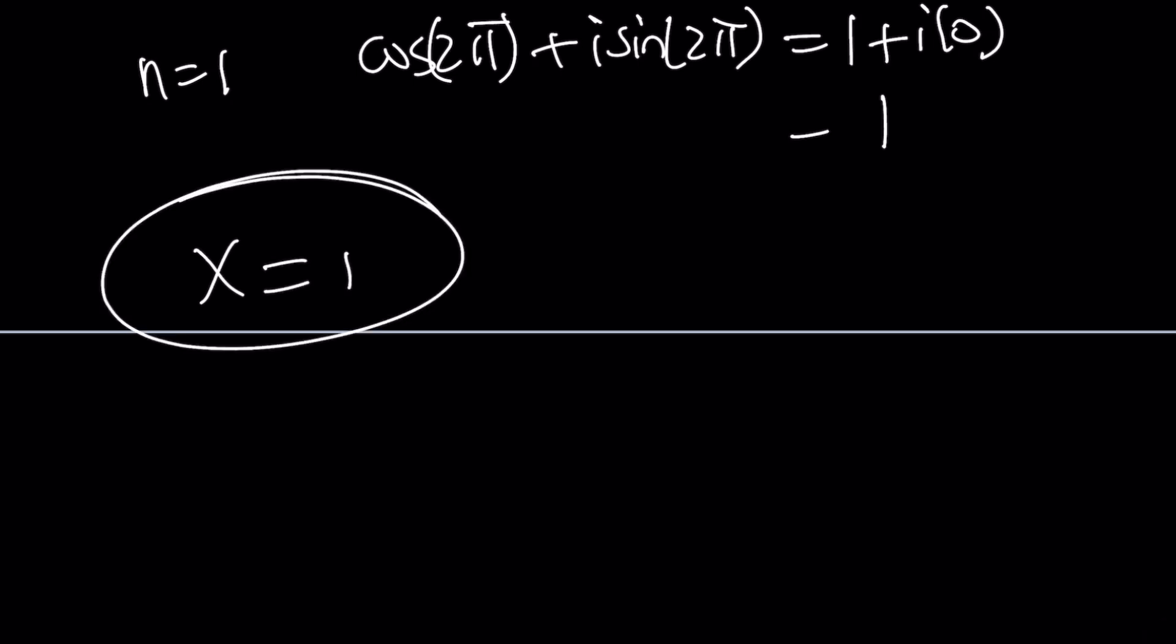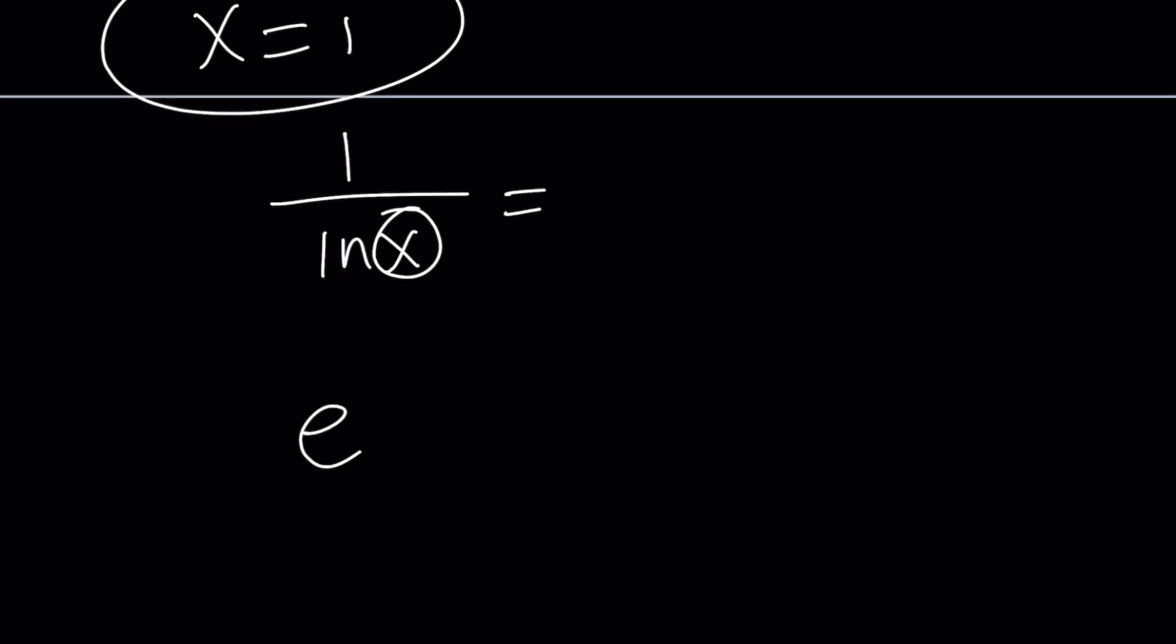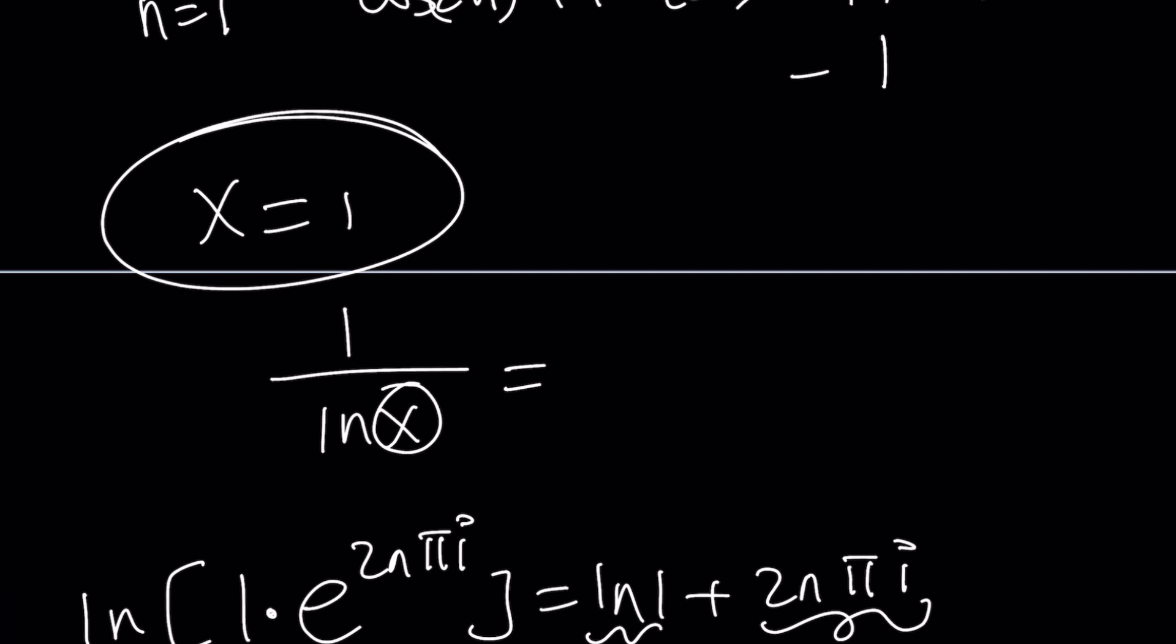So here's the problem. If x is equal to 1, we're going to run into an issue here because we have 1 over ln(x) equals this. And ln(1) is equal to 0. But not if you write 1 as a complex number, then it's not going to be 0. Because it's going to be 0 plus something. Think about it. If you have e to the power 2nπi, and this is kind of 1 times, right? And if you ln it, you're going to get ln(1) + ln(e to the power something), which is 2nπi. But this is 0. So you're going to end up with 2nπi. Or we could just say, hey, x is equal to e to the power 2nπi.